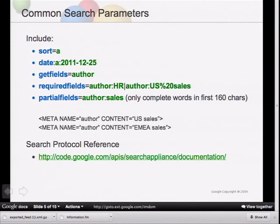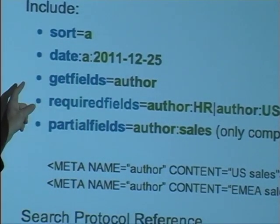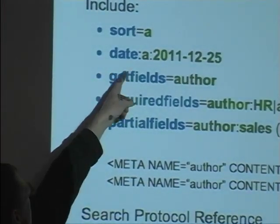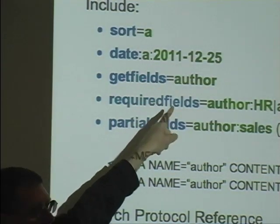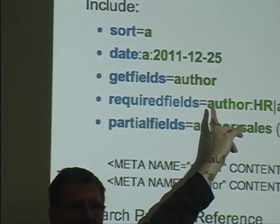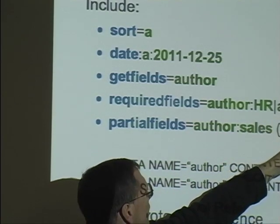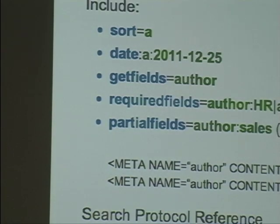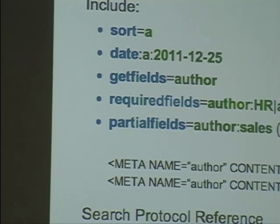Here are some of the search parameters that get sent over during the initial query in the URL string to the GSA. Sort can be ascending or descending. Date can specify a specific date — after a certain date. Get fields tells the GSA which metadata fields you want returned in the XML. Required fields can be set up to perform metadata filtering — for example, author equals 'HR' or author equals 'US sales'. You'll need to URL-encode this, so spaces become %20. This means the field must be an exact match.